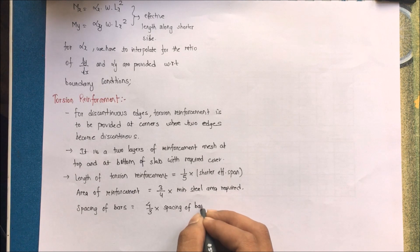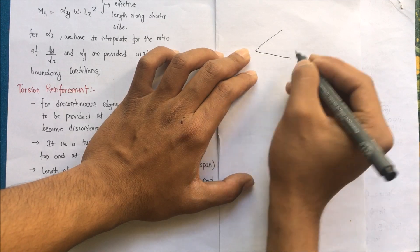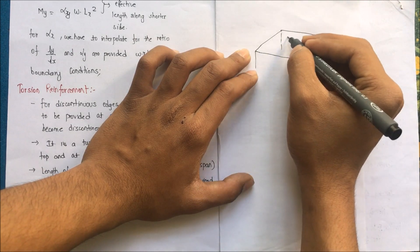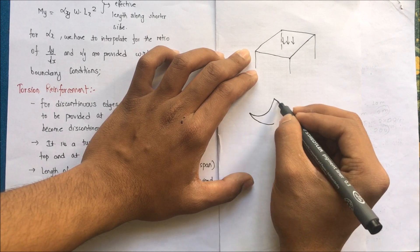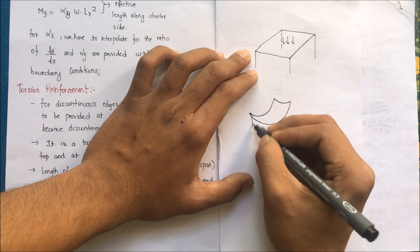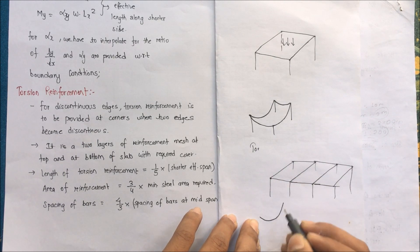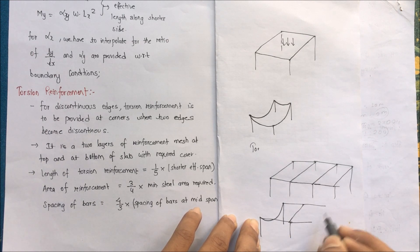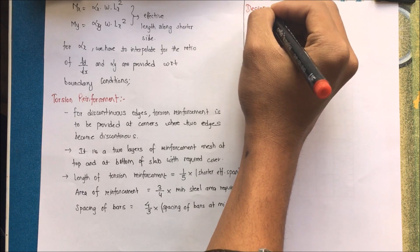The purpose of torsion reinforcement: consider a two-way slab supported on all four edges with a vertical load acting downward. For a simply supported slab with all edges discontinuous, the deflected shape at the corners tends to lift. For a continuous slab, the continuous edges are held, but the discontinuous corner will have a similar lifting tendency. Torsion reinforcement is provided at the discontinuous edges to hold down the corners.